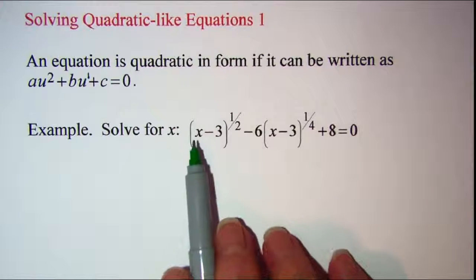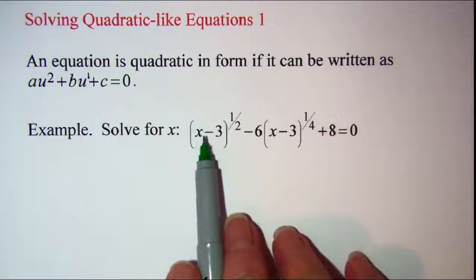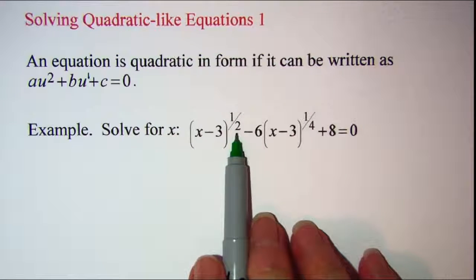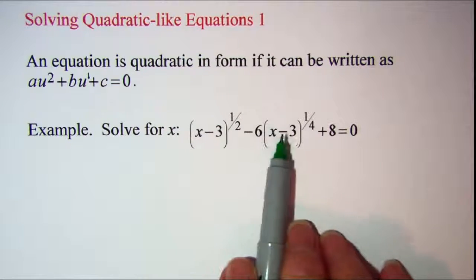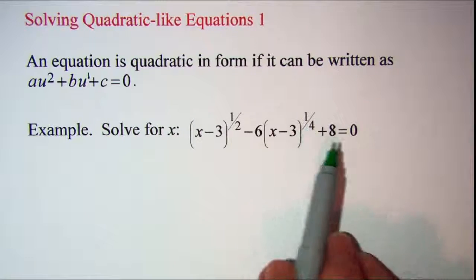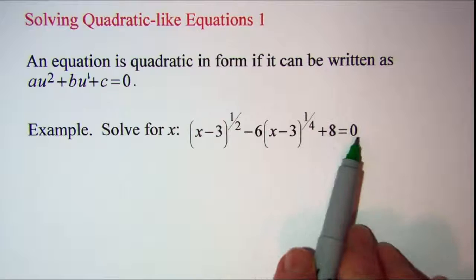So our equation that we're going to be solving is the quantity x minus three raised to the one-half power minus six times the quantity x minus three raised to the one-fourth power plus eight equals zero.